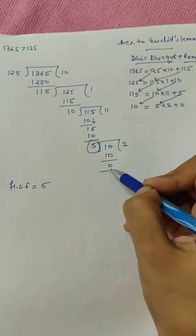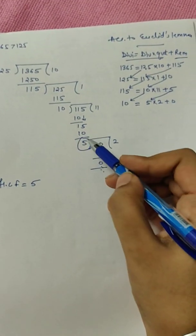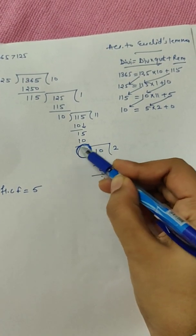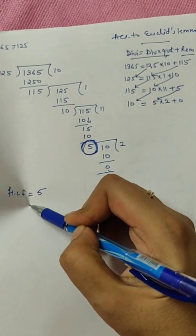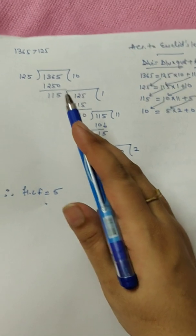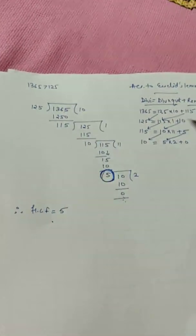And the step where the remainder is zero, in that step, the divisor is called the HCF of the numbers, both the numbers. And always your bigger number will come inside.